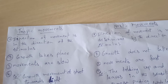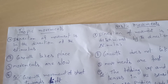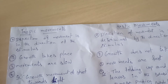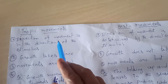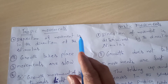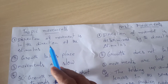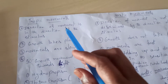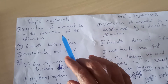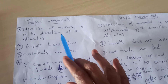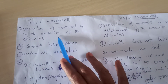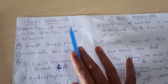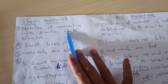First, we move to Tropic movements. What are Tropic movements? The direction of movement is in the direction of the stimulus. When a stimulus comes, the movement direction follows that same direction — that is called a Tropic movement.